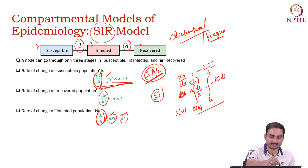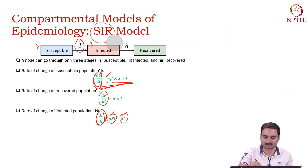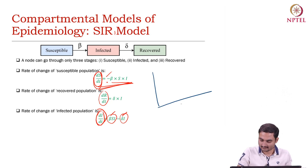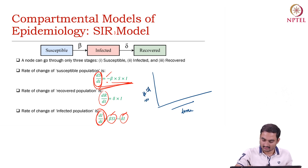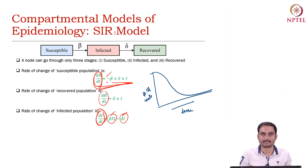So if we draw this population — S, I, and R — over time, you will see this kind of curve. This is time (here time means iteration), and this axis is number of nodes. The number of susceptible users will decrease over time; initially it is 100 percent.